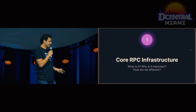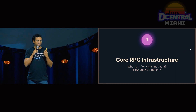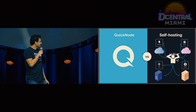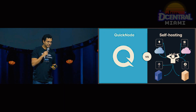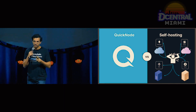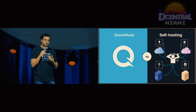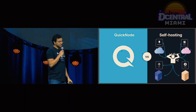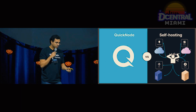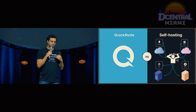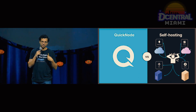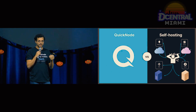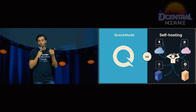What exactly do we do? What is core RPC infrastructure, why is it important, and how are we different? Let's start with the simple case. If you're building your own blockchain-enabled product and you need to read or write from that blockchain, you might need to manage servers yourself on Google Cloud or AWS — keeping the blockchain in sync, performing the initial sync, keeping client software up to date through hard forks, and making sure hardware meets requirements as the blockchain grows.